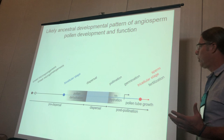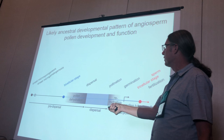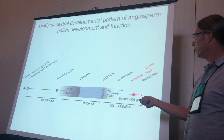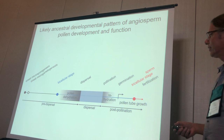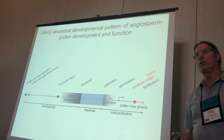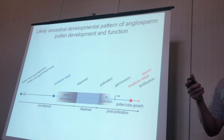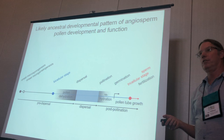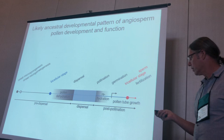Here's a likely ancestral developmental pattern of angiosperm pollen. Pollen gets initiated by sporogenous tissue in an anther. It develops to the bicellular stage, at which time it usually undergoes dehydration and gets dispersed. There's a so-called free-living stage where it lives in a dormant state as it disperses. When it lands on a stigma it undergoes germination, which largely involves rehydration and the mobilization and restarting of the metabolic machinery — it becomes a living organism again. Then pollen tube growth happens, development of the sperm cells happens, and eventually fertilization happens.